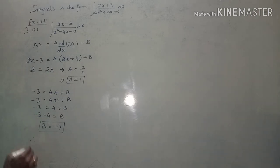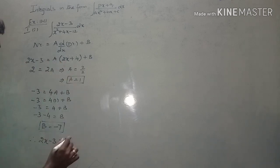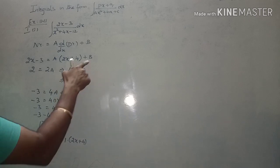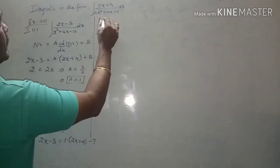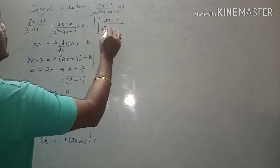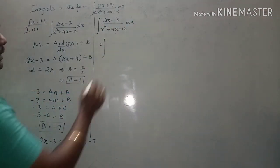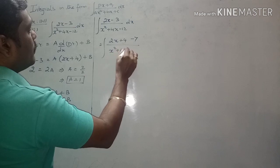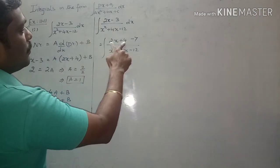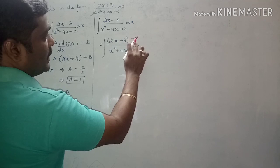Therefore, the numerator 2x minus 3 can be written as 1 times (2x + 4) plus (minus 7). Rewrite the numerator as (2x + 4) minus 7. You can verify: 2x + 4 minus 7 = 2x minus 3. Now consider (2x + 4) as the first term and minus 7 as the second term.